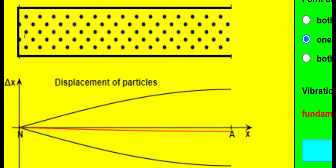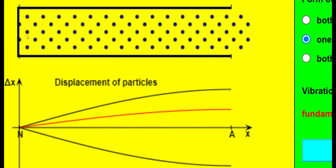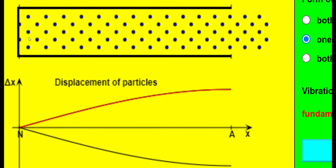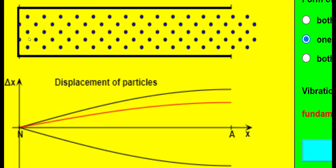If you look at the left end of the tube, you'll notice that the blue circles are not moving, meaning that the left end is the position of a node.